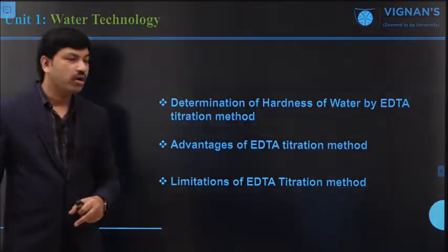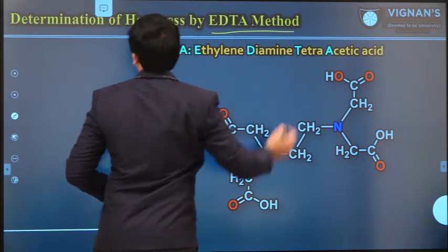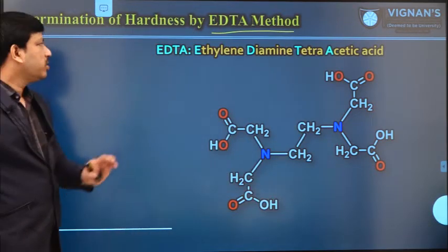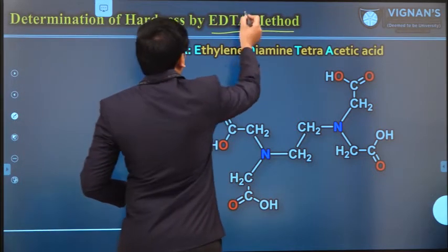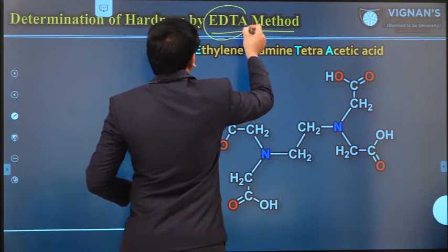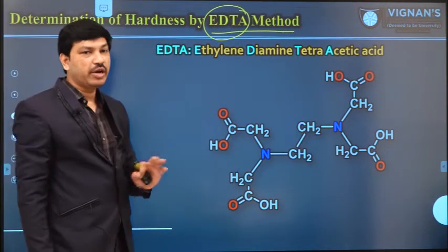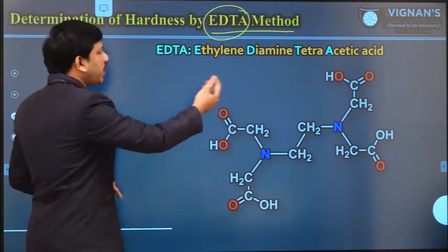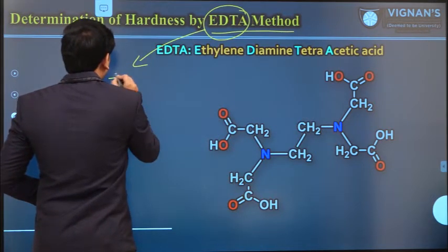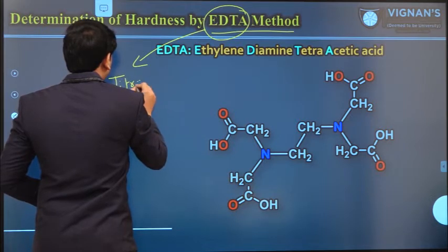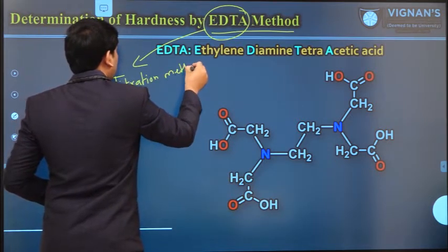Let us start with determination of hardness of water. So generally hardness of water can be determined by using EDTA titration method. In this case we are using EDTA, one of the complexing agents. This is one of the complexometric titrations. We will discuss why it is called complexometric titration — basically this is one of the titration methods.